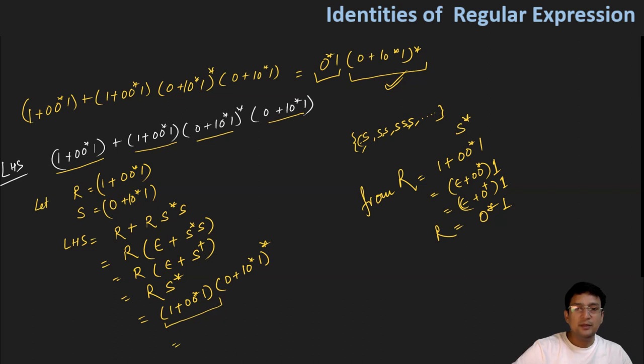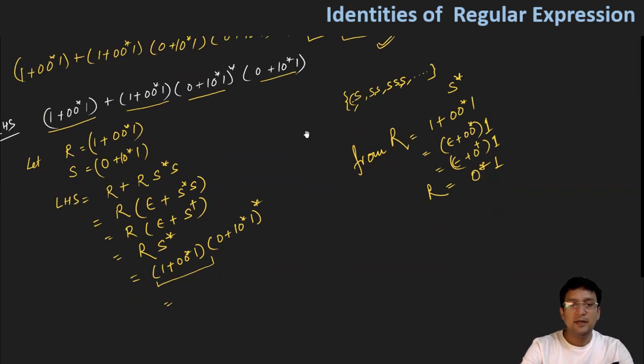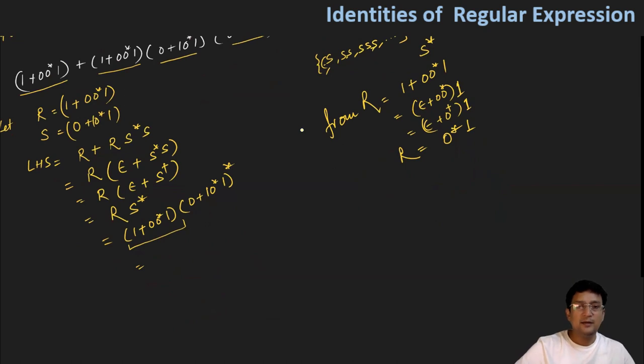This means the right side part, we just need to make one replacement. This underlined part we replace with 0*1, and the remaining quantity we write as (0 + 10*1) and its closure.